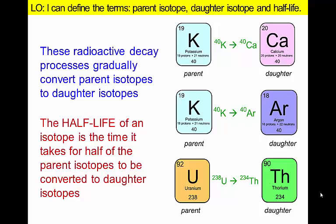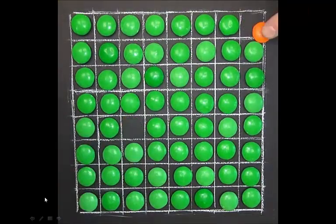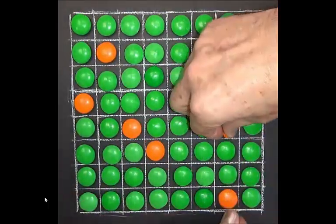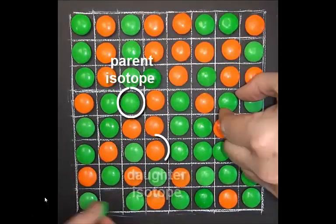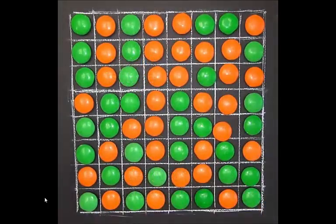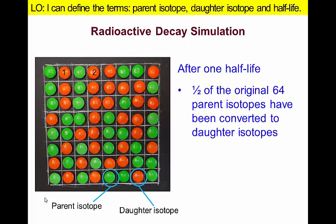Let's see how this works with a simple analogy using something familiar. Imagine that this grid of green candies represents radioactive isotopes before decaying began. As they decay, these parent isotopes will be converted to orange daughter atoms. One half-life will have occurred when half of these 64 green candies are replaced by their orange cousins.